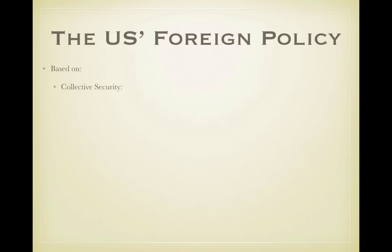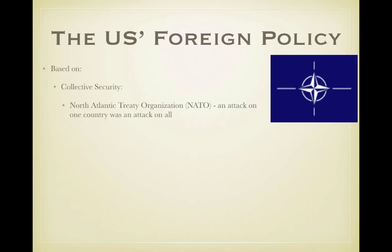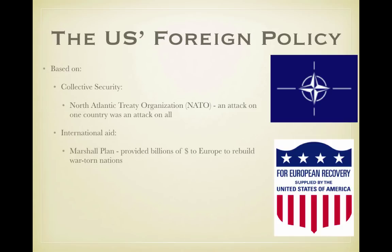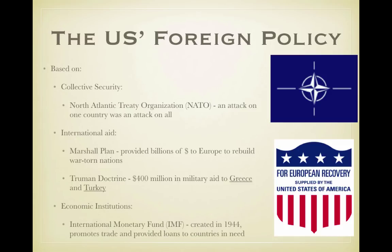The U.S.'s foreign policy during this time was based on collective security. The North Atlantic Treaty Organization, or NATO, saw an attack on one country as an attack on all — a collective agreement that if one member was attacked by the Soviet Union or any communist nation, it would be as if all were attacked. International aid also played an important role: the Marshall Plan provided billions of dollars to Europe to rebuild war-torn nations, and the Truman Doctrine gave $400 million in military aid to Greece and Turkey. Economic institutions were also created, such as the IMF, or International Monetary Fund, established in 1944 to promote trade and provide loans to countries in need.